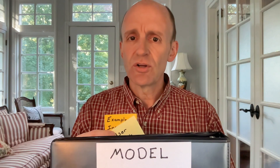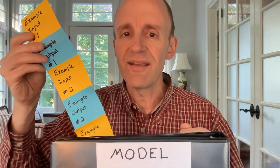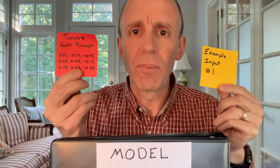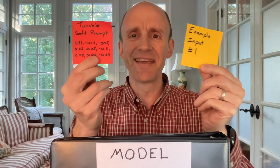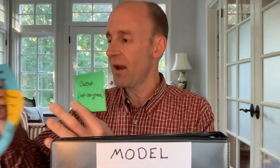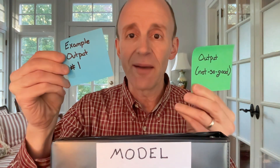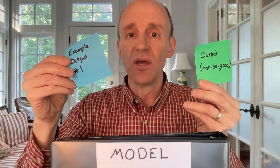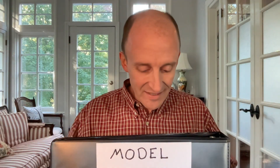Prompt tuning turns all of this on its head. Instead, we use our examples in a training phase. We start with our example input and put something in front of it called a tunable soft prompt — which is essentially a bunch of random numbers. We feed that into our model, and the first output probably isn't great. But we compare that output with our reference example output, and using a loss function and backpropagation, we iterate through all of our examples multiple times to arrive at an ideal tunable soft prompt.